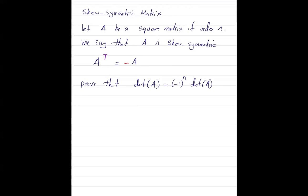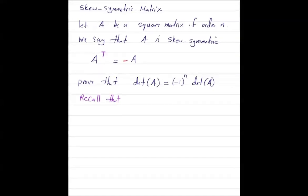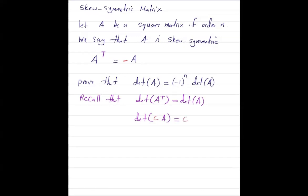Let us begin. In proving this statement, recall that the determinant of the transpose of a matrix is equal to the determinant of that matrix. And if you have a scalar multiplication, the determinant of C times A is equal to C to the power n times the determinant of matrix A. These are the important properties we are going to use here.